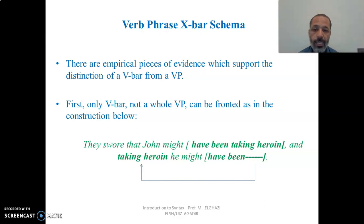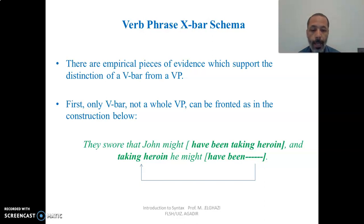There are empirical pieces of evidence supporting the distinction of a V-bar from a VP. First, only V-bar — not a whole VP — can be fronted, as in: 'They swore that John might have been taking heroin, and taking heroin he might have been.' The part of the verb phrase that is moved is just 'taking heroin' — the verb and its complement — which is precisely what we call the V-bar.